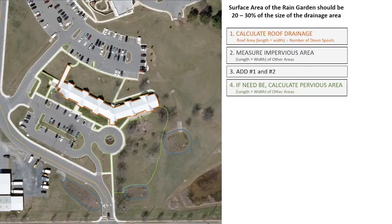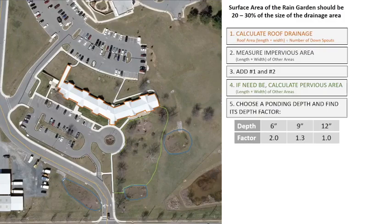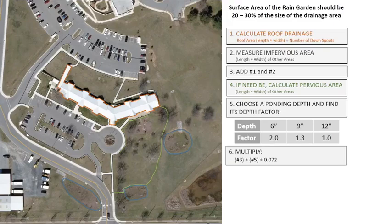If you need help determining the parts of your lawn that will drain to the garden, observe your property's runoff patterns during the next storm event. The next step is to decide on the depth of your ponding area. This depth is the distance from the top of the berm to the rain garden soil, not the mulch. It is recommended that the depth be between 6 and 12 inches. Once you have determined this number, look up the corresponding depth factor and record it on line 5 of the sizing worksheet. Next, multiply the total impervious surface area on line 3 by the depth factor on line 5 and the runoff estimator for impervious surfaces, which is 0.072.